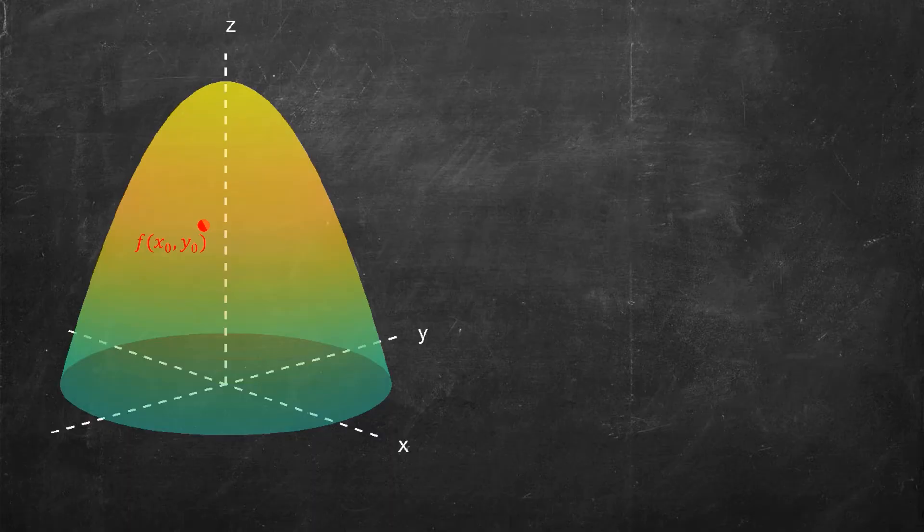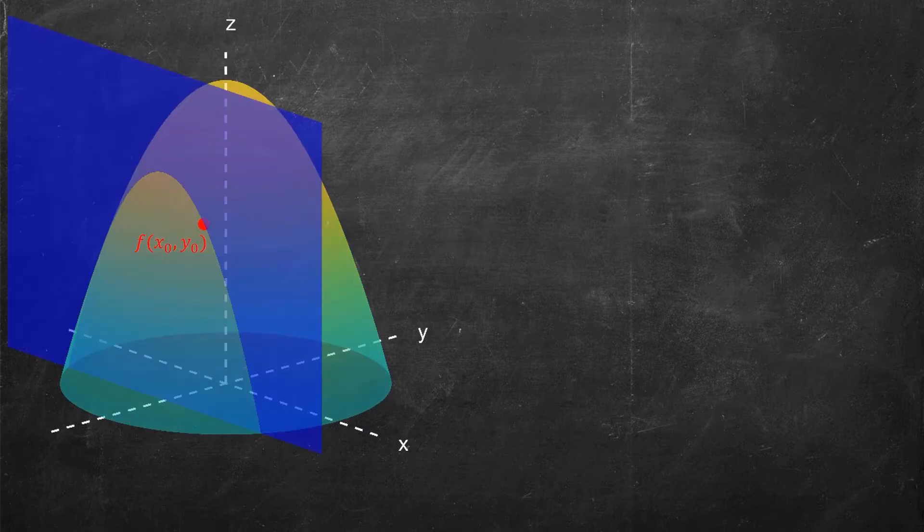Now, what I want to imagine is that I am going to constrain my y value. I'm not going to change my y value, but I am allowed to move in the x direction. That is, I'm constraining myself to living on a plane like this, where I have a fixed y value, y has to be equal to y₀. But other than that, I can walk along my surface.